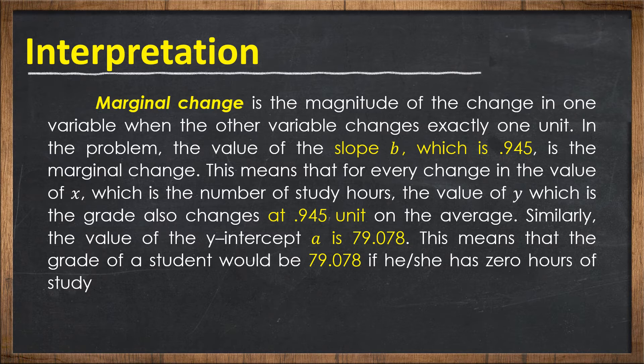Based on the interpretation, the marginal change is the magnitude of the change in one variable when the other variable changes exactly one unit. In the given problem, the slope value of 0.945 is the marginal change. This means that for every change in the value of x, y, which is the grade, also changes at 0.945 units on average. Similarly, the y-intercept a is 79.078, meaning the grade of the student would be 79.078 if he or she has zero hours of study.